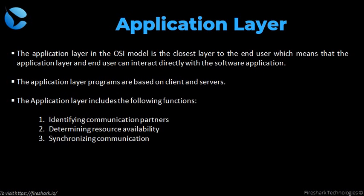The application layer in the OSI model is the closest layer to the end user, which means that the application layer and the end users can interact directly with the software applications. The three functions we are going to discuss are: identifying communication partners, determining resource availability, and synchronization of communication.